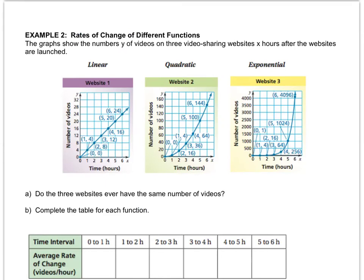In example two, they've given us three different graphs that we've seen before: linear, quadratic, and exponential. And they want us to essentially do the same kind of thing. We're going to be comparing the graphs. But first question is, do the three websites ever have the same number of videos? Well, linear and quadratic both meet at (0,0), but exponential doesn't meet at (0,0). But they all have the same at (1,4).